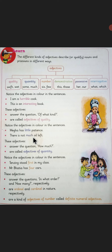Take another example: 'There is not much oil left.' The word 'much' over here is in colour and it is a describing word. It is an adjective of quantity — it describes how much oil is left. The answer is 'not much.' These adjectives of quantity describe or answer the question 'how much,' and these kind of describing words are called adjectives of quantity.